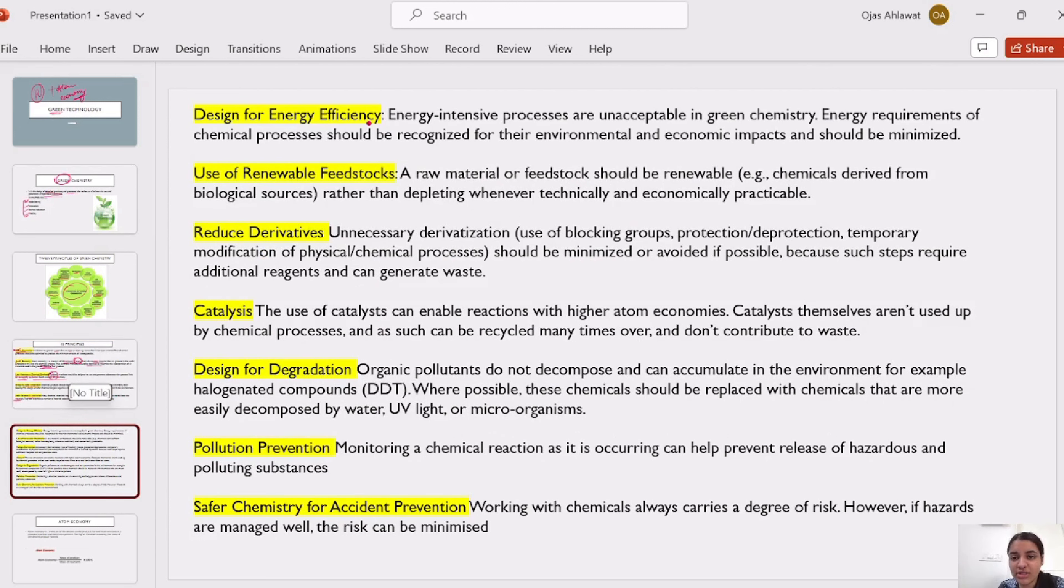Next, energy efficiency. Energy intensive processes can be used to create energy requirements such as the energy requirements of the environment without impact. Renewable feedstock. So, feedstock can be easily renewed. It can be used by biological sources and environment. And use it in practical ways, not to degrade it for our greed.